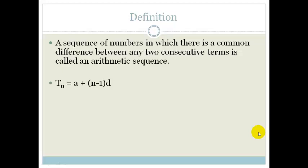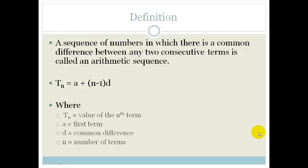The general formula for it is Tn equals a plus n minus 1d, where Tn is the value of the nth term, a is the first term, d is the common difference, and n is the number of terms.